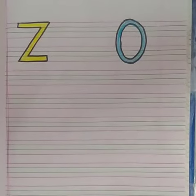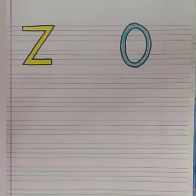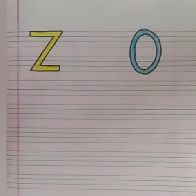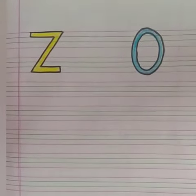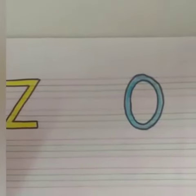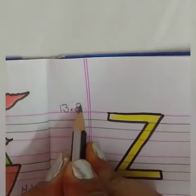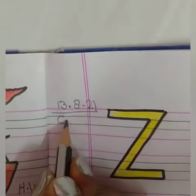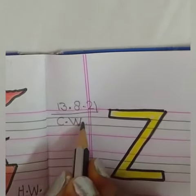A very good morning to all lovely kids. This is your English class and today we are going to work in our English copy on alphabet Z. So first we will put date: 13, month 8, year 21. This is your classwork. So we will write here C.W.